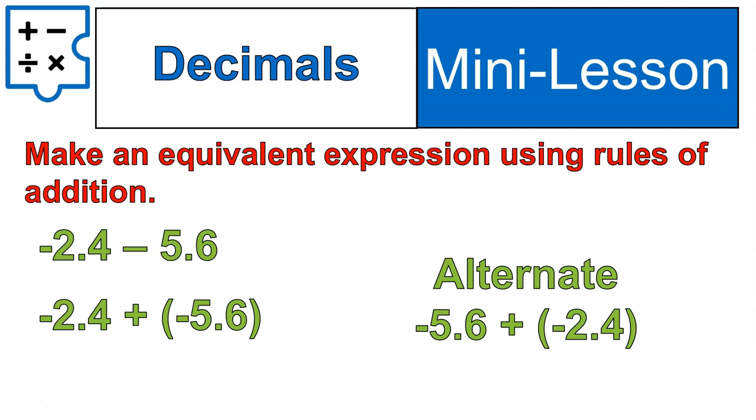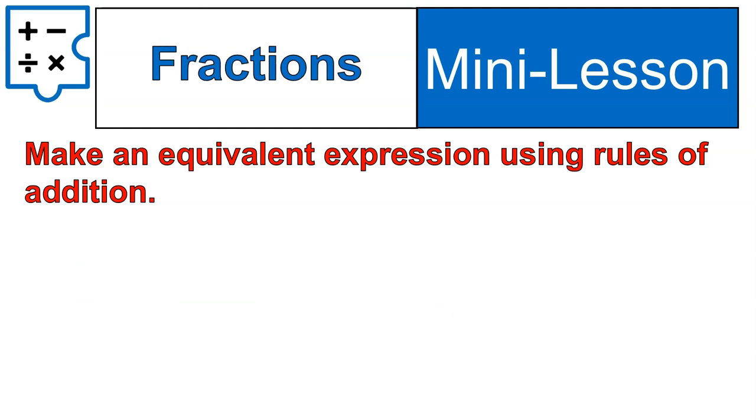With this case, we're adding two negatives. Putting them in one order versus another order doesn't necessarily make it any easier. But at this point, if you know your rules for adding negatives, you add those two numbers together and keep the sign.